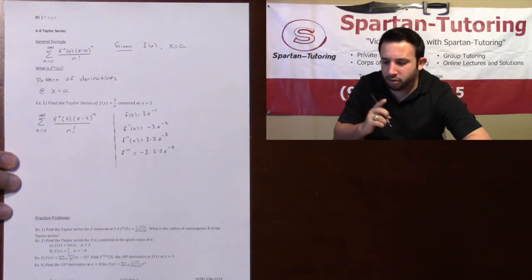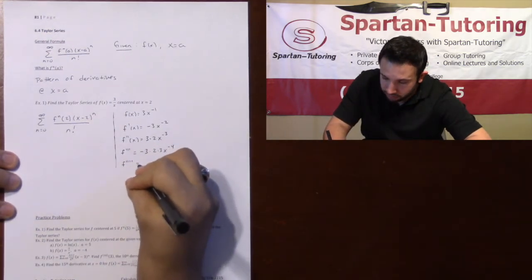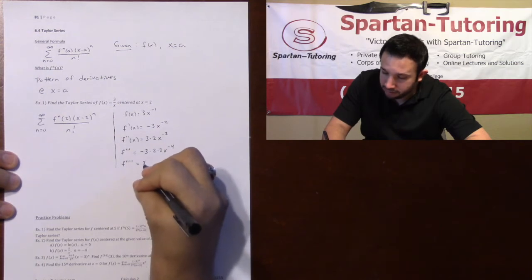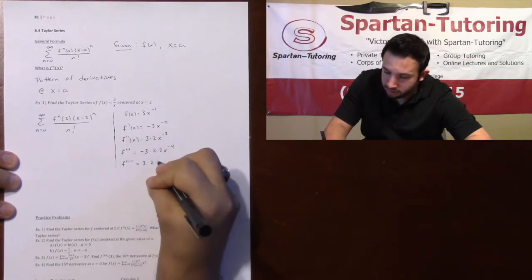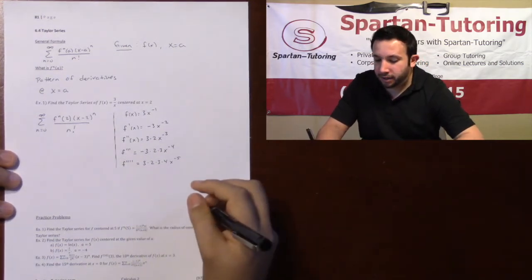I think I'm starting to see a pattern. Let's do one more just to be safe. Our fourth derivative is going to be a positive 3 times 2 times 3 times 4, x to the negative 5. And I think I see the pattern.